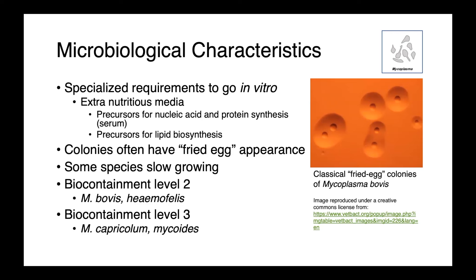Looking at the containment requirements for mycoplasma: Mycoplasma bovis, hemophilus, and other hemotrophic mycoplasmas are all biocontainment level 2, while Mycoplasma mycoides and capriculum are biocontainment level 3. These would be very serious foreign animal diseases if ever introduced into Canada.